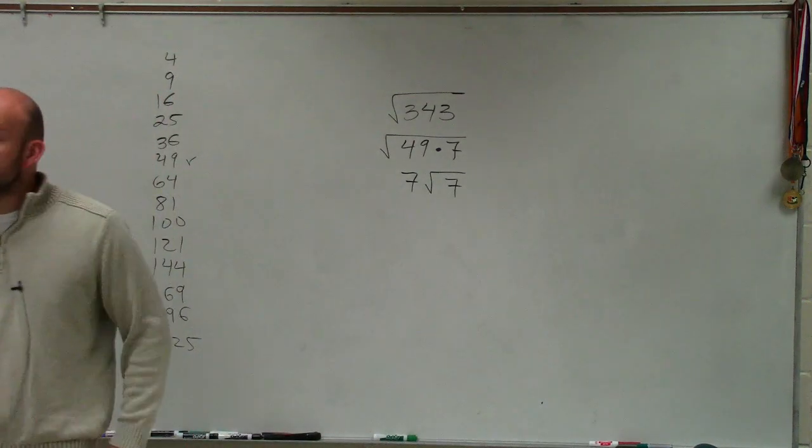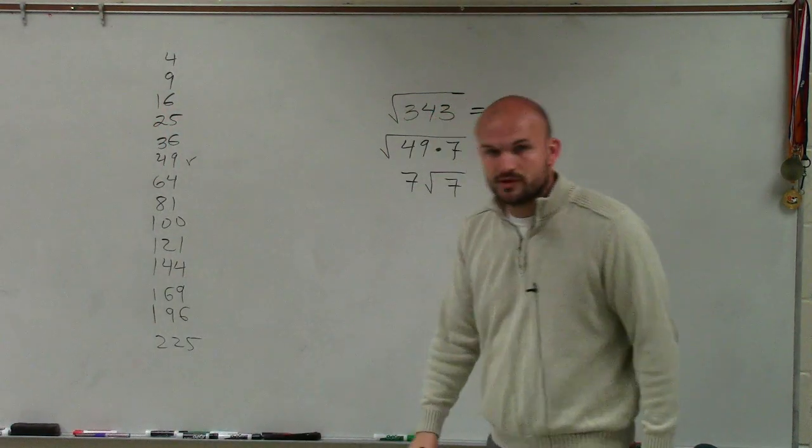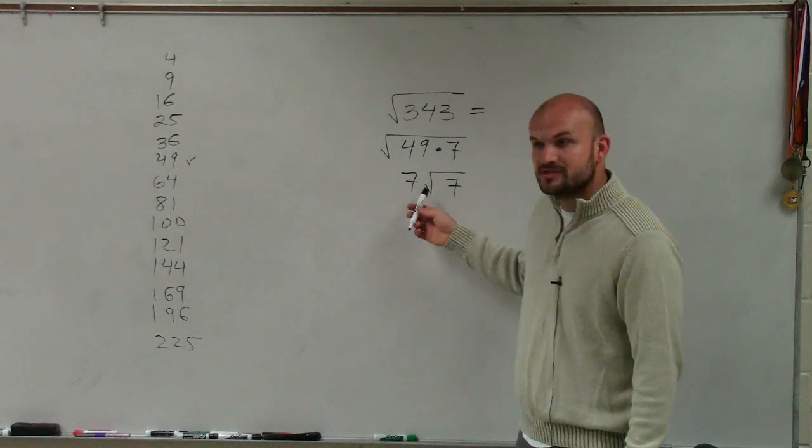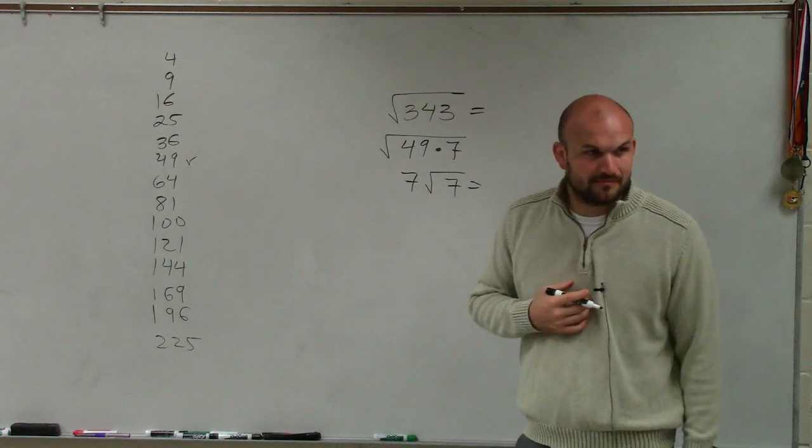Now what I'd like you to do is check in your calculator, just type in the square root of 343, then type in your calculator the square root of 7 times 7. And guess what? They're the exact same thing.